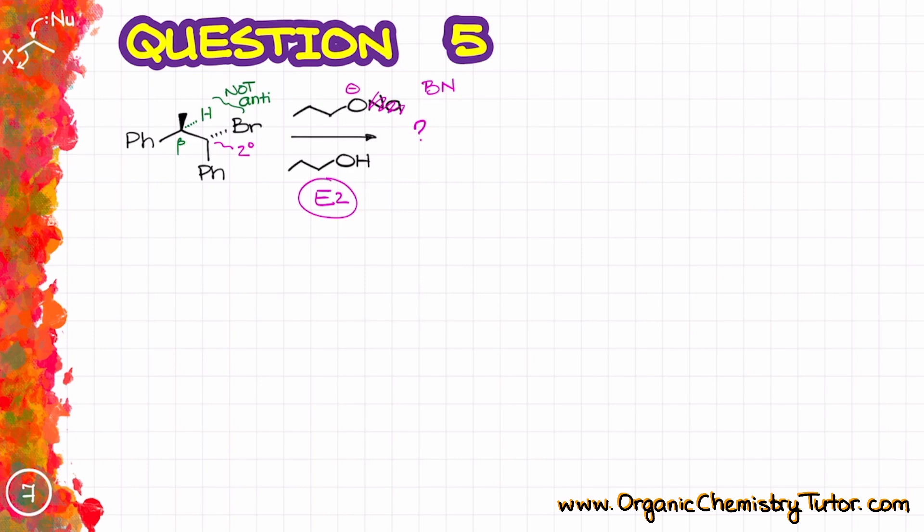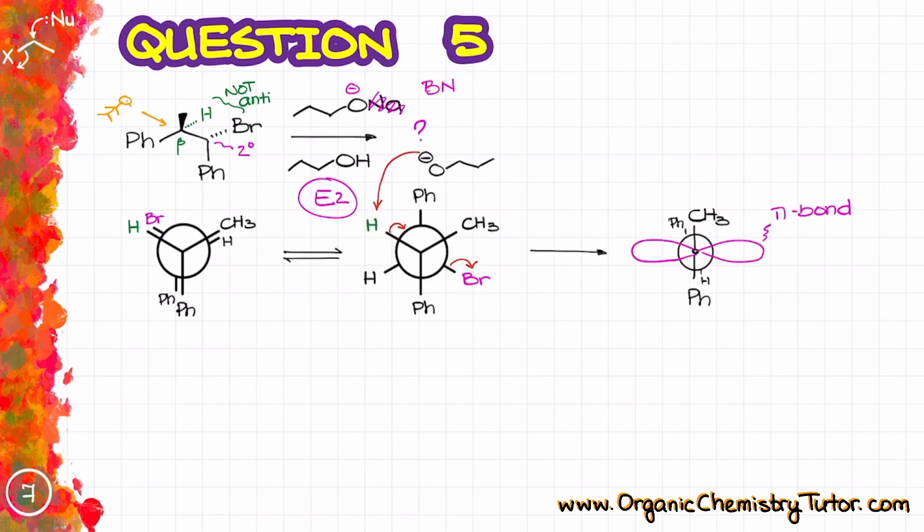So if I were to construct the Newman projection looking from the left side for instance that's what I'm going to see and this is an eclipsed conformation. So what we want in this case is this bromine and this hydrogen to be anti-periplanar to each other and in order to be able to have them in anti-periplanar conformation I will have to rotate either the front or the back atom of this molecule. So let's say I'm going to rotate the back one clockwise which will now put my hydrogen and bromine in the anti-periplanar position. So now I will be able to make a pi bond in between them and once I do that what I'm going to get is a picture something like that.